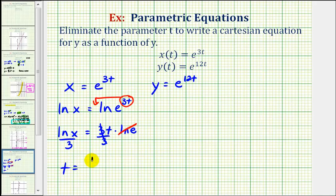So we have t equals natural log x divided by three. And now we'll perform a substitution into the equation involving t and y.